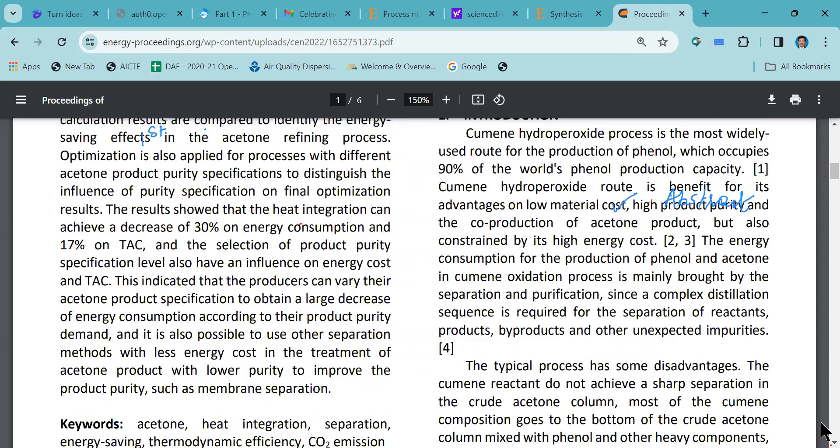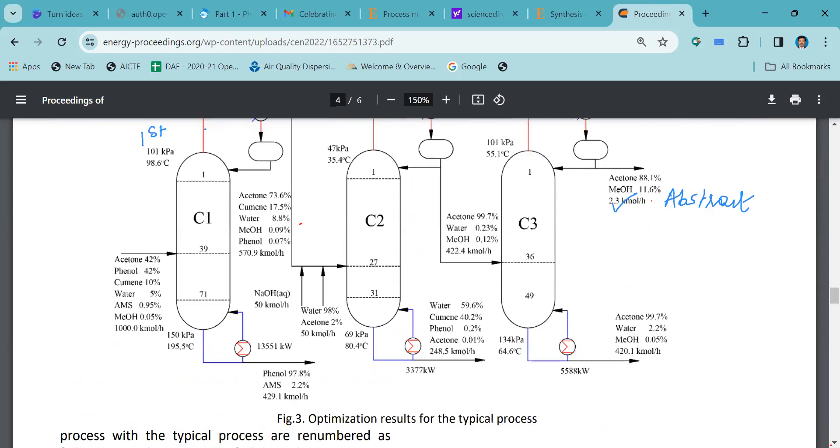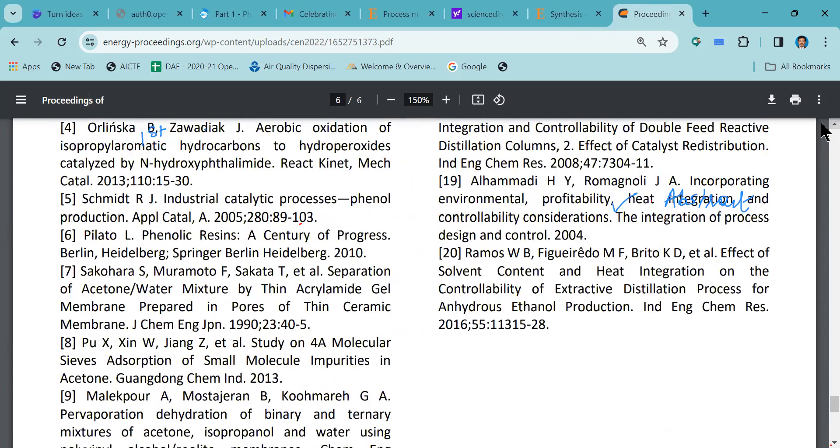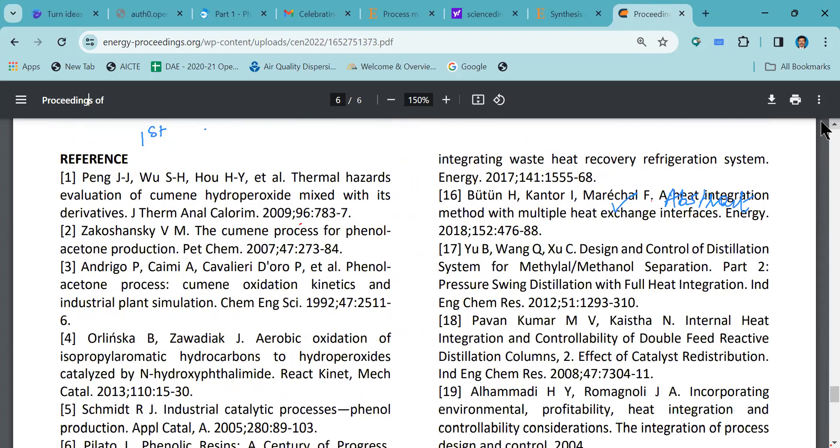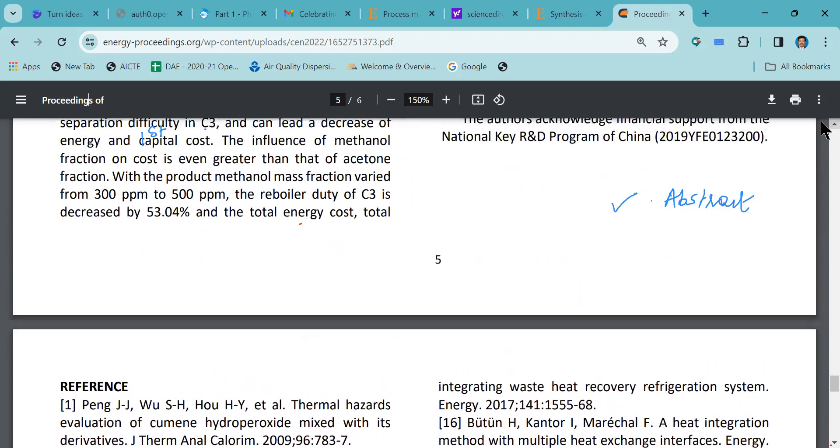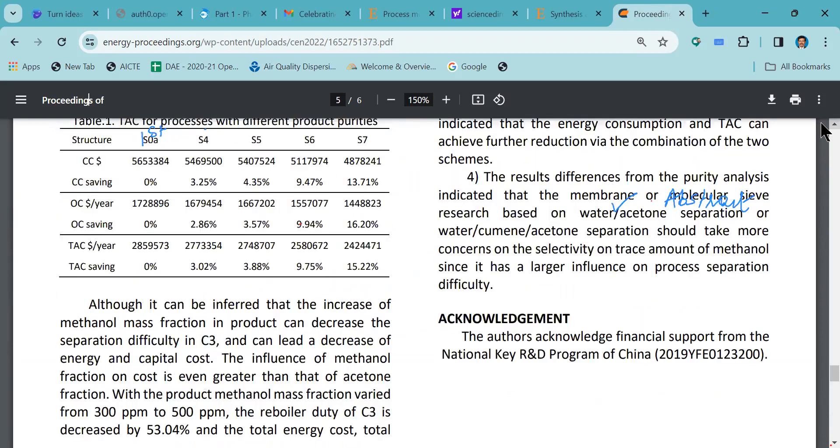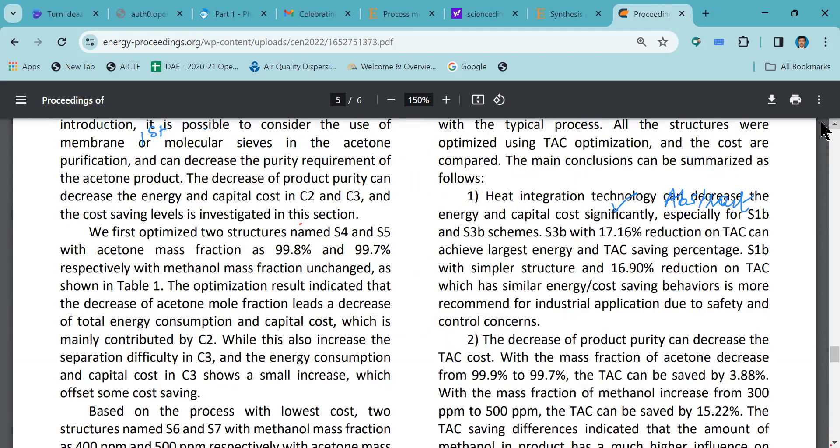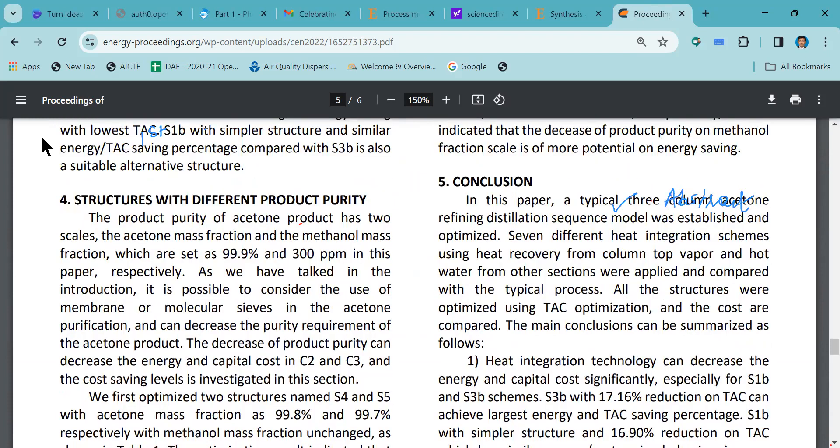Next part, we have to go down to the conclusion section. Generally a conclusion section is given, or it might be a results and discussion section. But at the end, there will be something called conclusion or results. Take up that particular conclusion section and try to understand in what way they are writing about this conclusion.